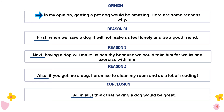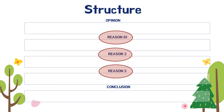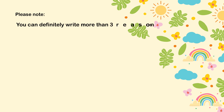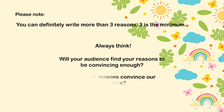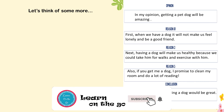Now that we know how to use the structure, we also learned that we have to write three reasons — reason one, reason two, and reason three. But remember, boys and girls, it's not only three reasons that you can write; you can definitely write more than three. Three reasons are the minimum, because just one or two reasons will not convince our audience — we need at least three. Always think: will your audience find your reasons convincing enough? Would they be persuaded? You can definitely write more than three reasons, so let's explore.